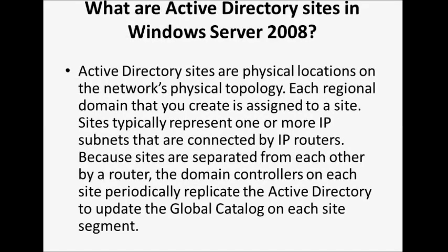What are Active Directory sites in Windows Server 2008? Active Directory sites are physical locations on the network's physical topology. Each regional domain that you create is assigned to a site. Sites typically represent one or more IP subnets connected by IP routers. Because sites are separated from each other by a router, the domain controllers on each site periodically replicate the Active Directory to update the global catalog on each site segment.